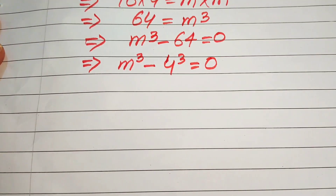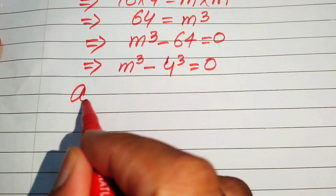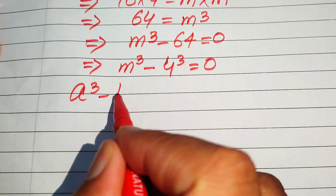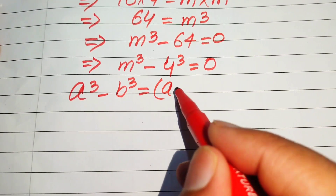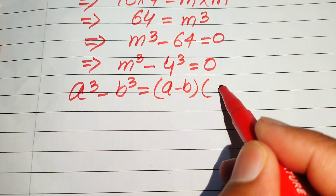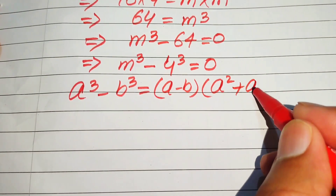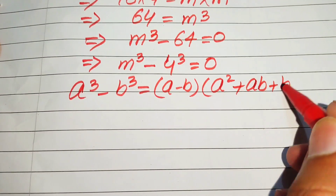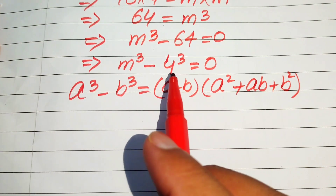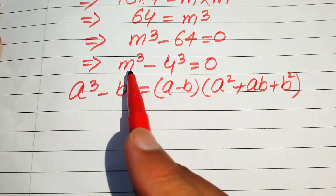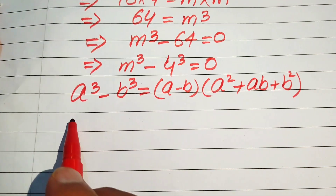In the next step we need the cubic factoring formula. We know that a cubed minus b cubed equals (a minus b) times (a squared plus ab plus b squared). Here we apply this formula where a equals m and b equals 4.